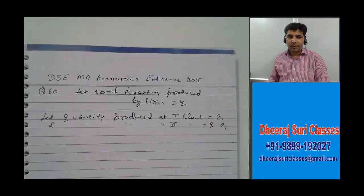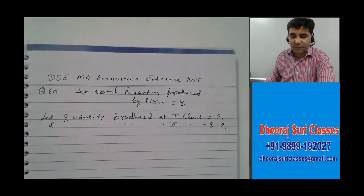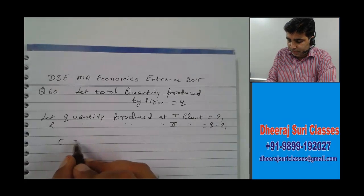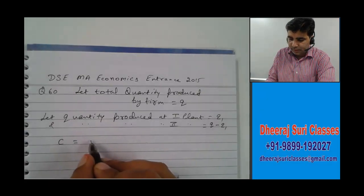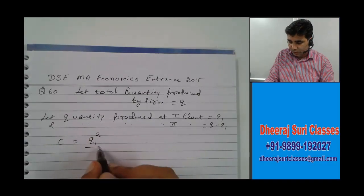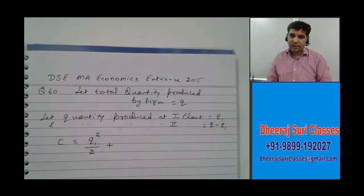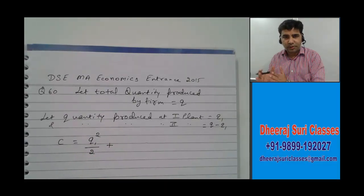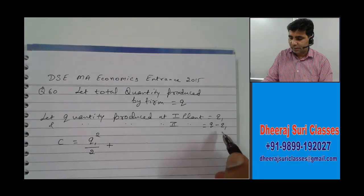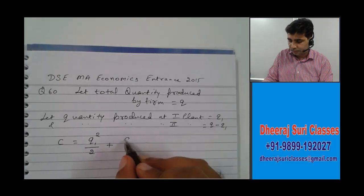Now, what will be the cost function of the firm? The firm's cost function is the first plant cost plus the second plant cost. The first plant cost function is Q1 squared divided by 2, and the second plant cost is Q2 squared, where Q2 is Q minus Q1.